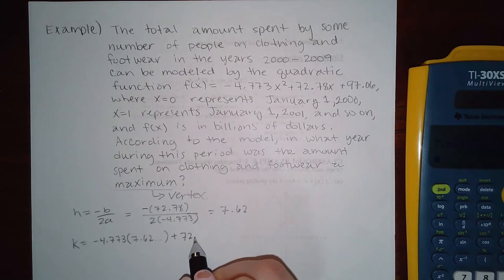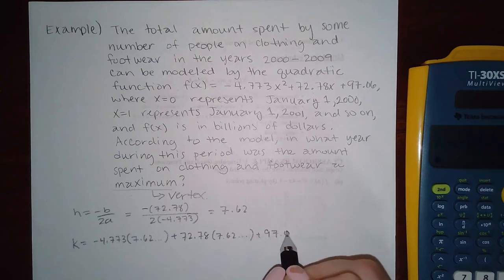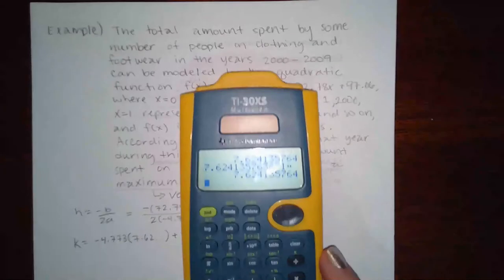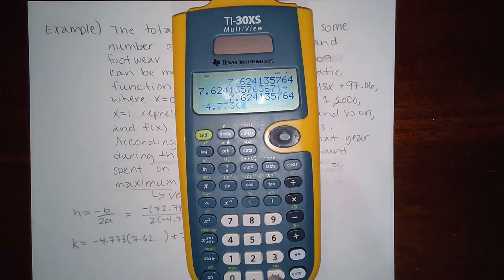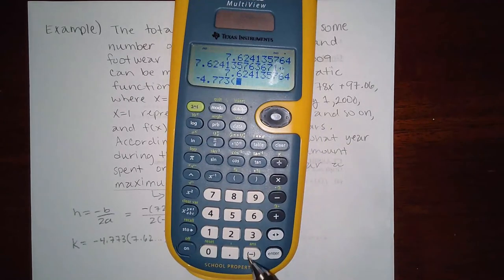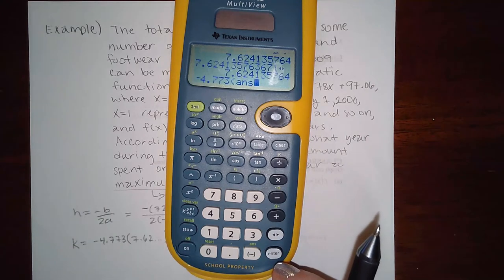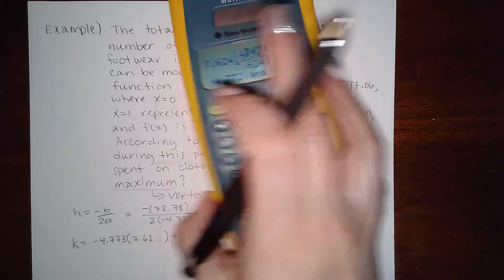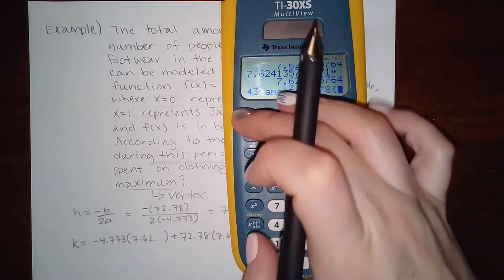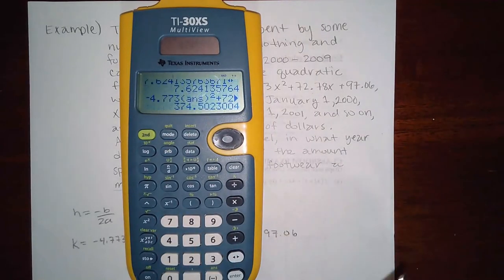I'm just going to put a dot because I'm not going to write down all the digits, plus 72.78 again that number plus 97.06. So on my calculator, what I'm going to do is I'm going to type negative 4.773, and I'm going to hit second and answer. It's over here above the negative, the green stuff. And if I hit this, notice it says answer. So what it's going to do is it's going to plug in that whole entire decimal. It's not going to chop it off and round it.